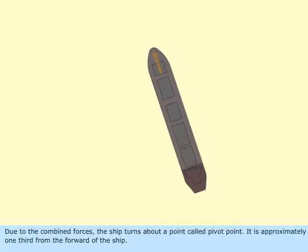Due to the combined forces, the ship turns about a point called the pivot point. It is approximately one-third from the forward of the ship.